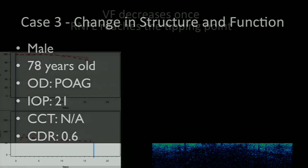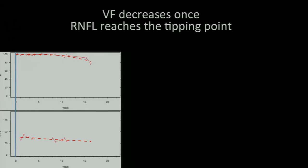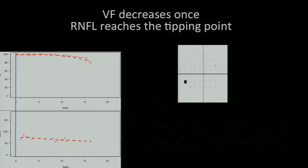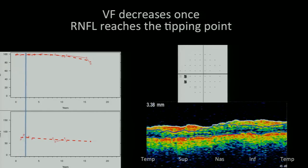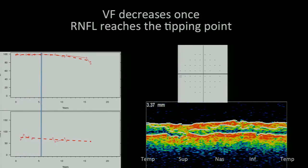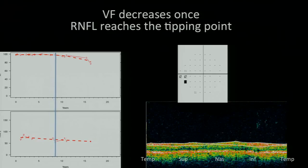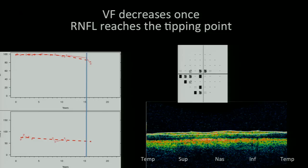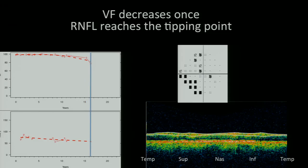Here's another patient who has a change in structure, and then once you reach the tipping point, a change in function. And so you're following this patient over time, and there's thinning occurring in the OCT. The visual field is very variable, but you can see that there's no change that sticks until the RNFL becomes thin enough, where you start to have visual field loss.